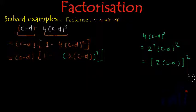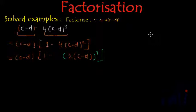And now we can use the formula a² - b² = (a-b)(a+b). And this one can actually be written as 1².